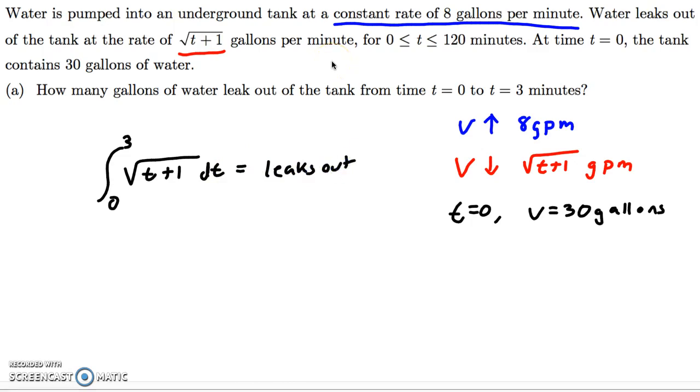And you can go ahead and plug that into your calculator, or you can take the integral by hand, but this is a calculator active question, and that comes out to be 14 thirds. So how many gallons of water leak out of the tank from time 0 to t equals 3? 14 thirds, the integral of the rate that it's leaking.